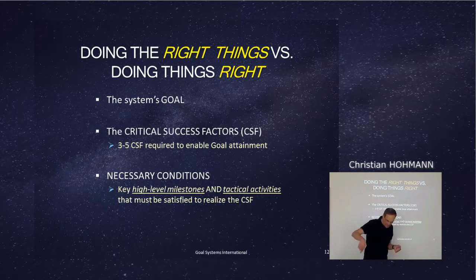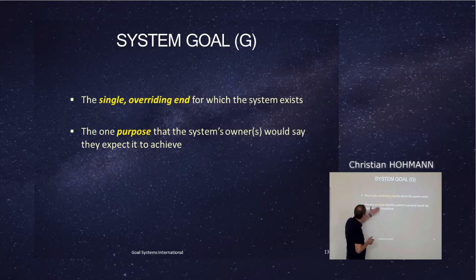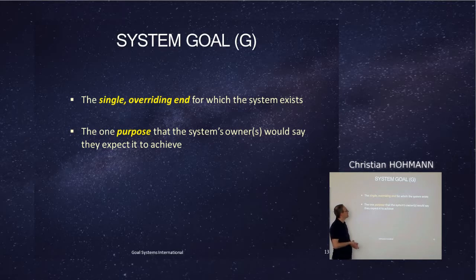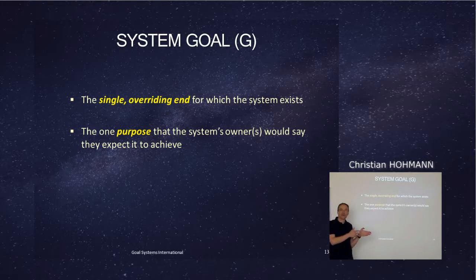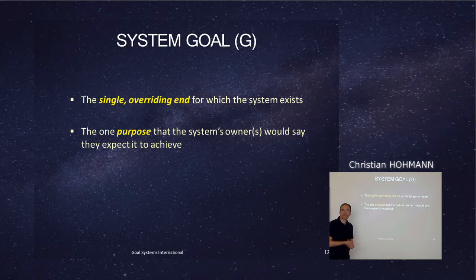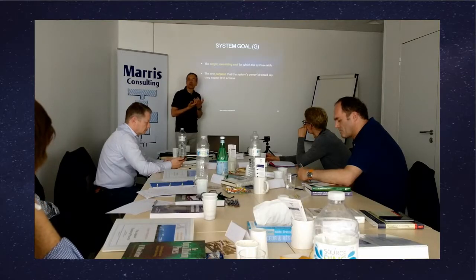The system's goal is one single overriding end for which the system exists — the ambition or the reason why the system was created. Who is legitimate to say what the goal is? In Bill's view, it's the owner or the delegates of the owner. For a very old company, the founder may no longer be there, but he left a legacy, and the people taking over carry on with the vision.